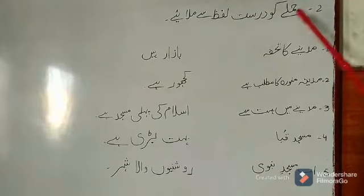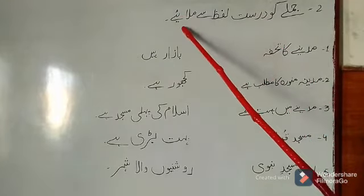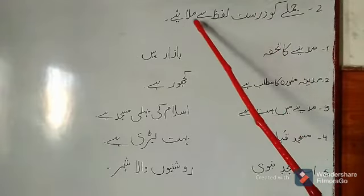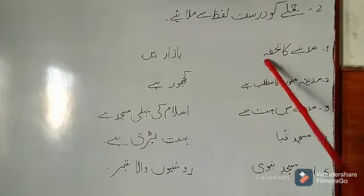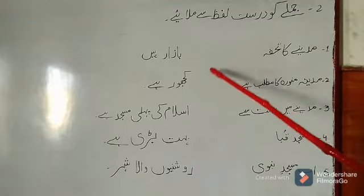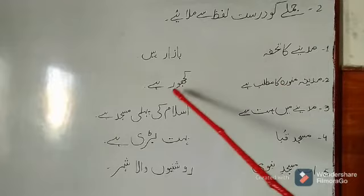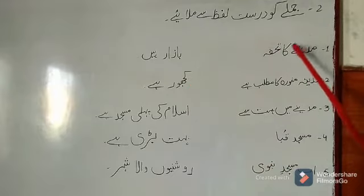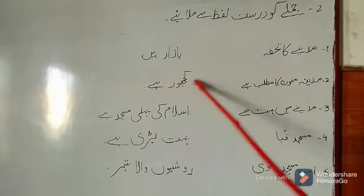Question number 2: जुमले को दुरूस्त लफ्ज़ से मिलाएं। (Match the sentence with the correct word.) पहला है — मदीने का तौफ़ा। मदीने का तौफ़ा कौन सा है? मदीने का तौफ़ा खजूर है। इसे यहाँ पे मैच कर दें। (What is the gift of Madinah? The gift of Madinah is dates. Match it here in the line.)